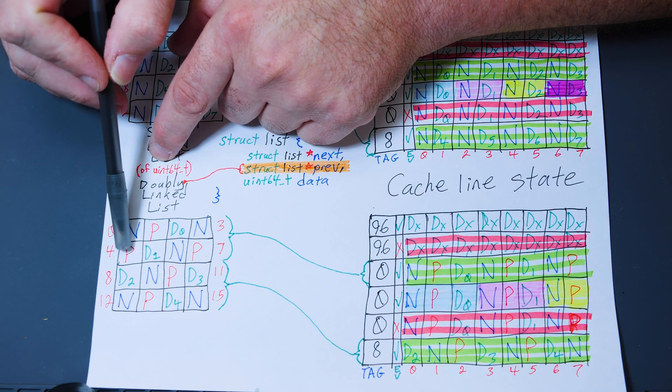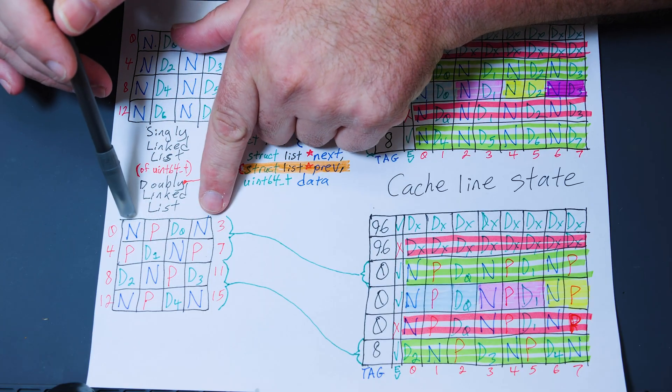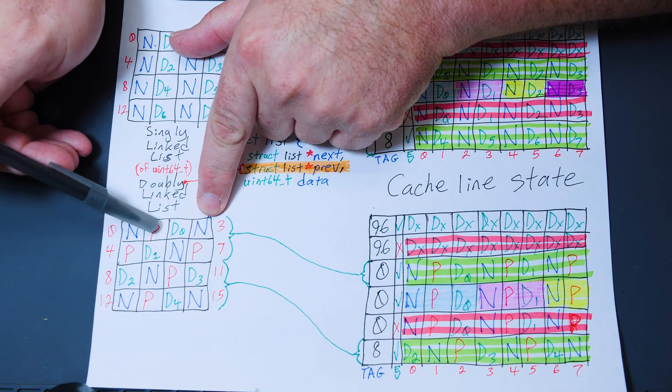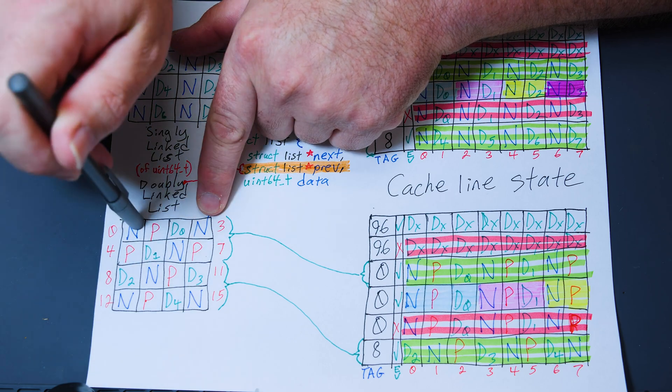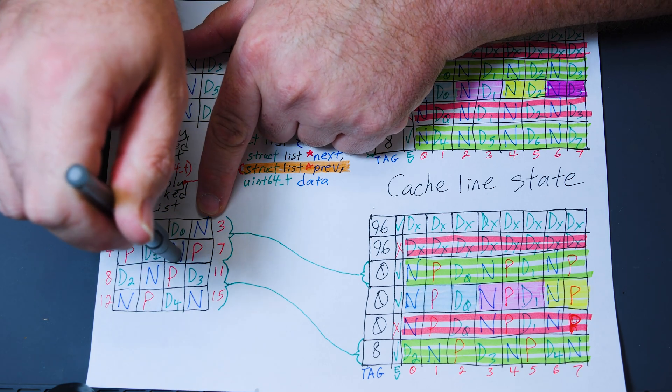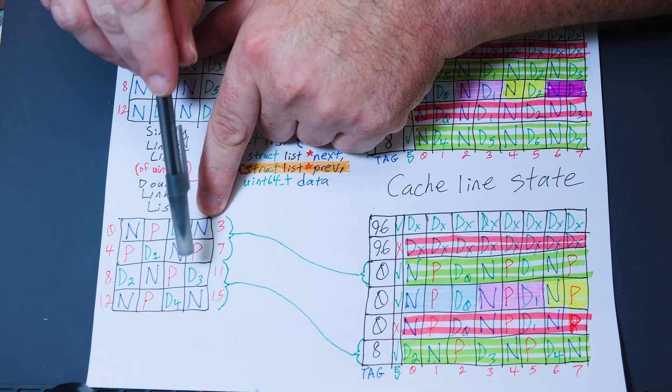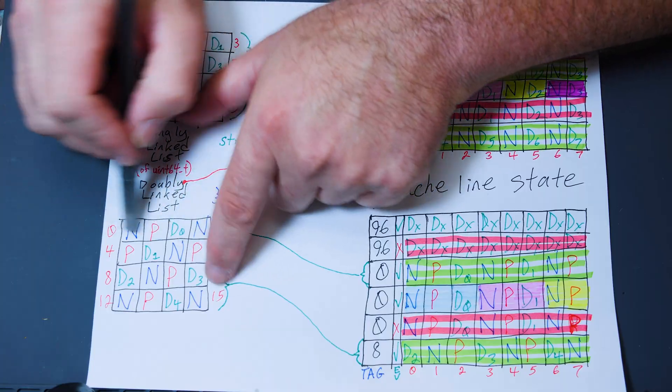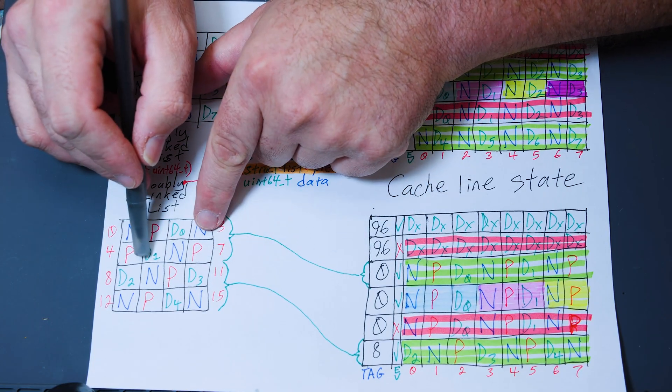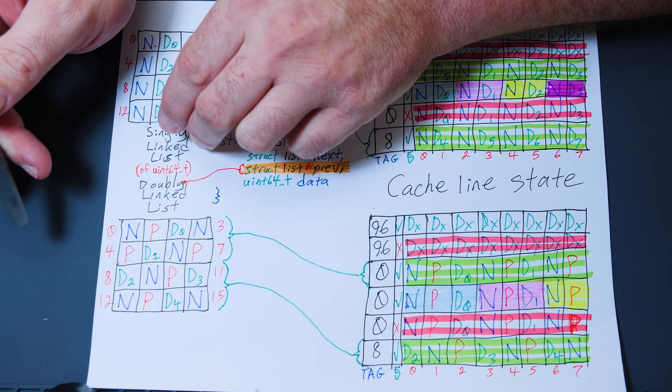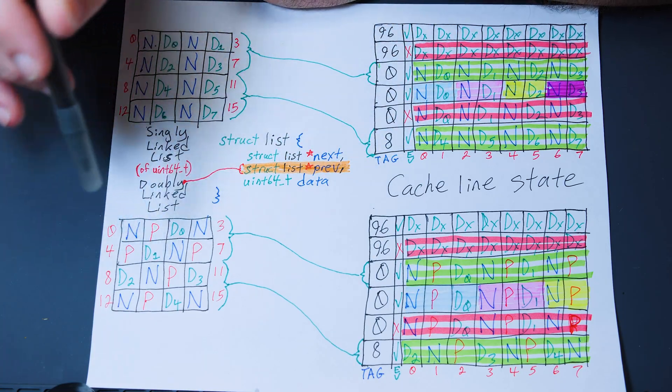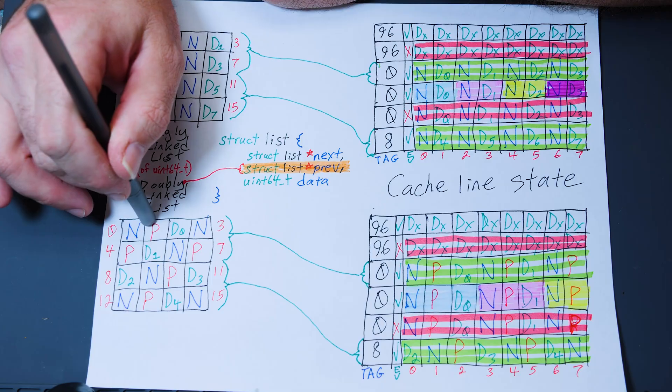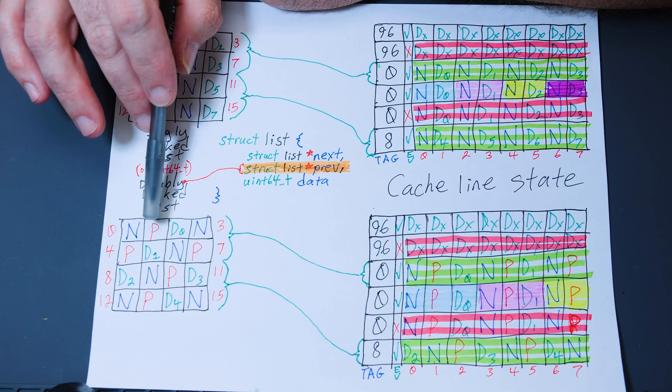The problem is how do you do that if you're on data one and you want to delete data one and you don't have a previous pointer? Well, the naive way is a doubly linked list. Now I can go back and delete, by connecting this to this, and then obviously I also have to connect this back to this. And once I've done this pointer connection around the item I'm going to delete, then I free it up.